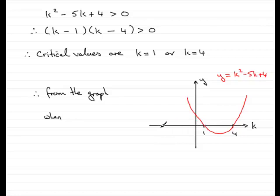So when k is any value less than 1, so when k is less than 1, or when k is more than 4, because the y values are greater than 0. They're above the k axis, so, or k is greater than 4. And that brings us then to the end of this part of the question.